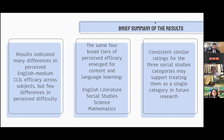To sum up the results: there were many differences in perceived efficacy for both language and content learning, but few differences in perceived difficulty. There seemed to be a four-tier hierarchy for content and language learning — English literature always ranking at the top, social studies subjects generally next, then science, then math. There were consistent similar ratings for the three social studies categories, so it probably makes sense to treat them as a single category.